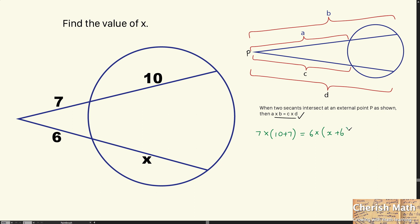So, we get x equals 7 times 17 divided by 6 minus 6. The value of the x is 83 over 6.